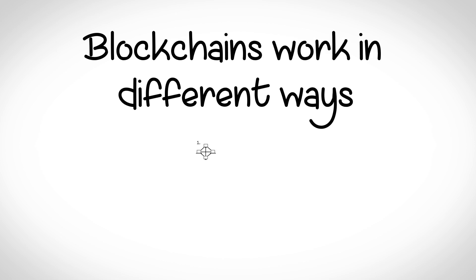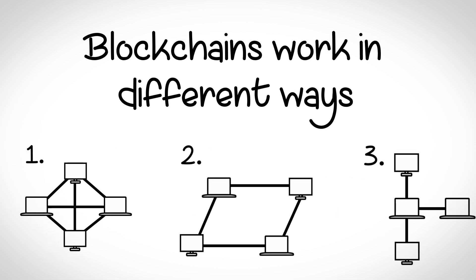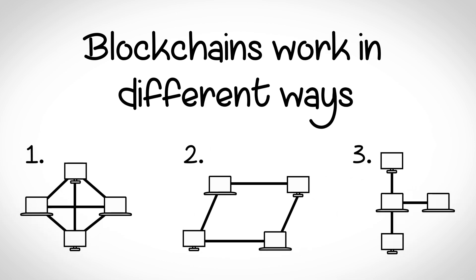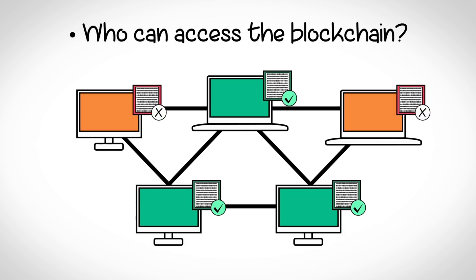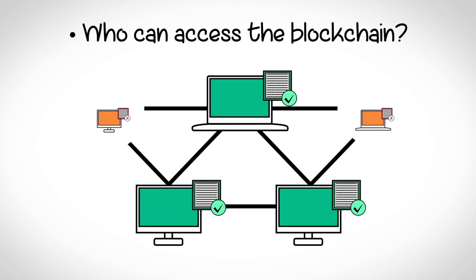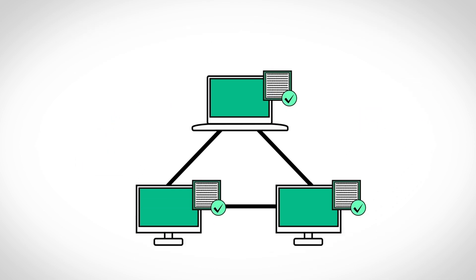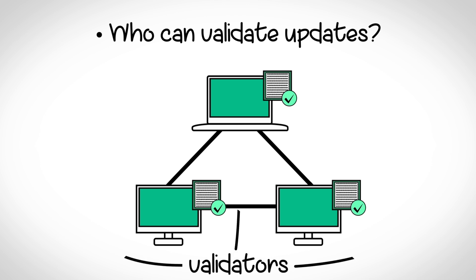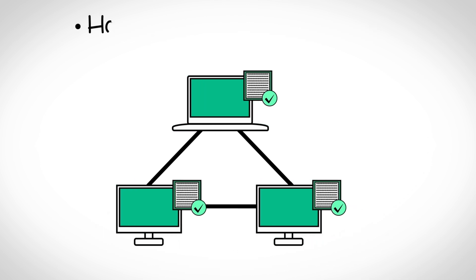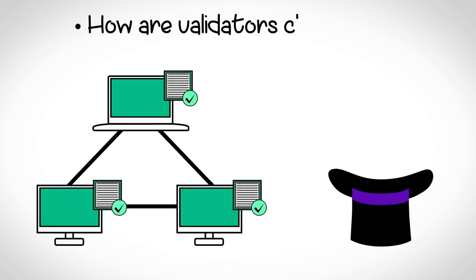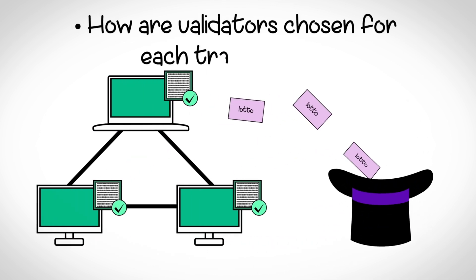Not all blockchains work exactly the same way. Different blockchains can have different rules for who can access the blockchain — everyone or just a single group — the type of people that can validate updates, and how to choose the validator for each transaction.